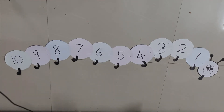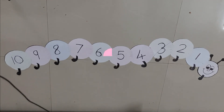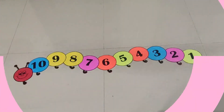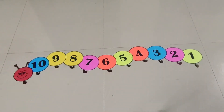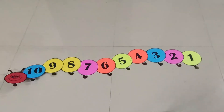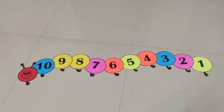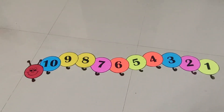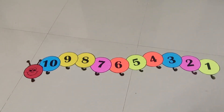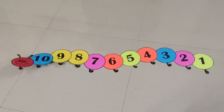Starts from smaller number to bigger number — this is called forward counting. Now let's see what is written on the backside of the caterpillar. Listen carefully.